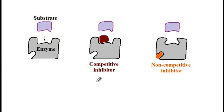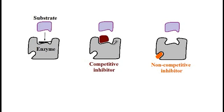In this video, I'd like to differentiate between competitive and non-competitive inhibitors. Here we have the enzyme, and the substrate binds to the active site, which is shown right here. With a competitive inhibitor, the inhibitor resembles the substrate, and thus it would be able to bind to the active site and block the binding of a substrate.